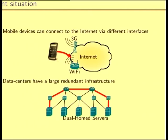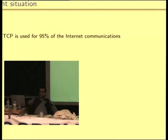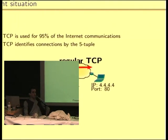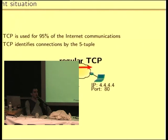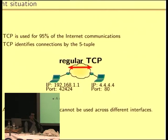So why is this happening? It is because TCP is used for 95% of the communications over the internet. And TCP identifies a connection by the so-called 5-tuple. Every host has an IP address when connecting to a network, and TCP also uses port numbers — source IP, destination IP, source port, and destination port — to identify a connection. And as an IP address is attached to an interface, you cannot use TCP across multiple interfaces.